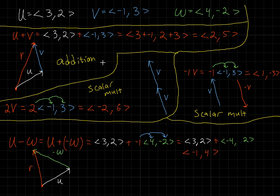Lastly, we used these ideas of addition and scalar multiplication to do subtraction with vectors. If you have subtraction, I find it easiest to change it into an addition problem: u plus negative w. We know negative w means you reflect w. So graphically, you can reflect w and then add using the head-to-tail method. If you're doing it algebraically, simply distribute just like with scalar multiplication, then add just like normal.